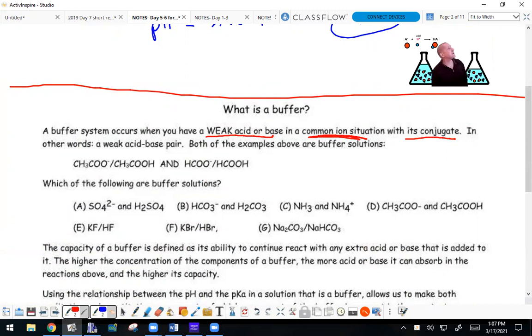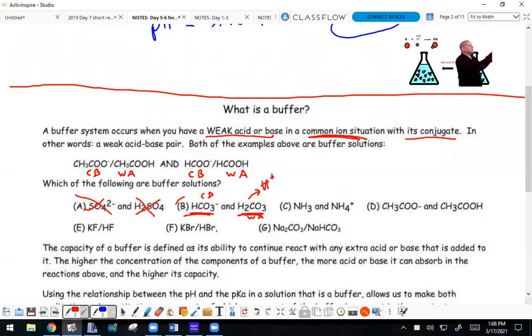Both examples above are buffer solutions. This is the conjugate base of the weak acid CH3COOH, and this is the conjugate base from the weak acid HCOOH. Which of the following are buffer solutions? This is a strong acid, so that's not a buffer. This is a weak acid and its conjugate base, so yes, that one's a buffer.